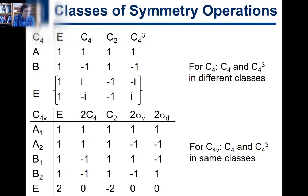Consider, for example, the C4 point group and its character table shown on top, and then the C4v point group and its character table shown on the bottom. These are very similar point groups; the only difference is that C4v has mirror planes — it has two sigma-v's and two sigma-d's. C4 doesn't.